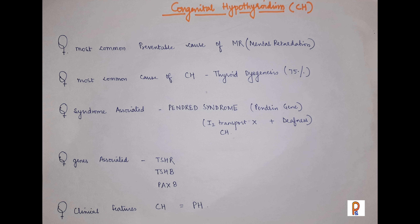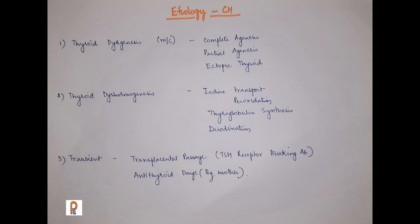The etiology of congenital hypothyroidism includes thyroid dysgenesis, which is the most common cause responsible for 75% of all cases. There may be complete agenesis, partial agenesis, or ectopic thyroid. Another cause is thyroid dyshormogenesis — a biosynthetic defect that may occur in iodine transport, peroxidation, thyroglobulin synthesis, or dehydration, all of which can lead to hypothyroidism.